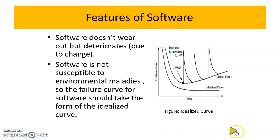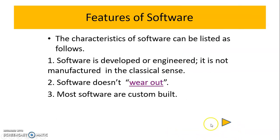The third feature is that software is custom built. As we have seen in our previous video on the different types of software, always remember that most software is custom built — that means it is based on the customer's requirements, such as graphical user interface, windows, pull-down menus, etc. So these are the features of the software.